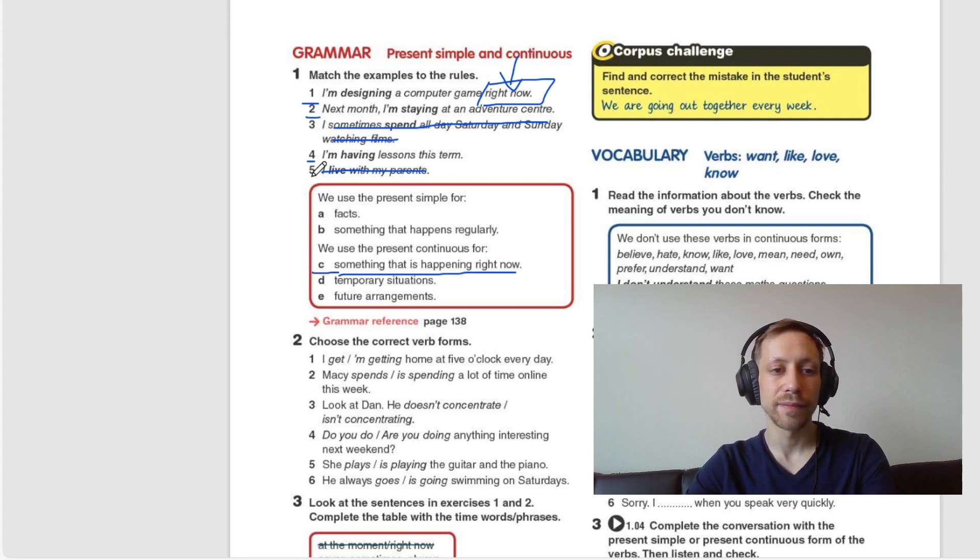That would be C, Temporary Situations. Is that number two, next month I'm staying at an adventure center or number four? I'm having lessons this term. Which one is temporary? It is number four, because it is for this term and it is happening now.